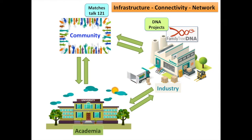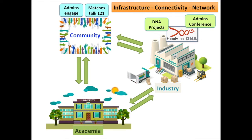These projects could either be surname projects, haplogroup projects, geographic projects, or specialist projects. Family Tree DNA allowed people to host their own websites on the Family Tree DNA website. For example, my Gleason DNA project has a website on the Family Tree DNA site. Over the course of the years there are now 10,000 surname projects administered by 5,500 project administrators. This was really the birth of genetic genealogy as a citizen science. The administrators of these projects engaged the community and in 2004 Family Tree DNA launched the first of an annual project administrators conference, which has run every single year since then.